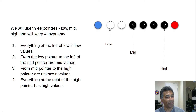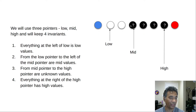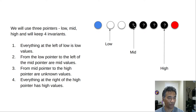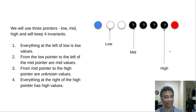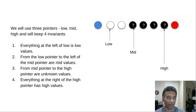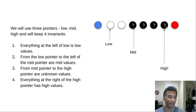The mid pointer always points to the first unknown value — we reveal that value and find its correct position. The high pointer points to the last unknown value, since everything to the right of the high pointer is a high value. Understanding these pointer roles will help us write the correct code for this algorithm.